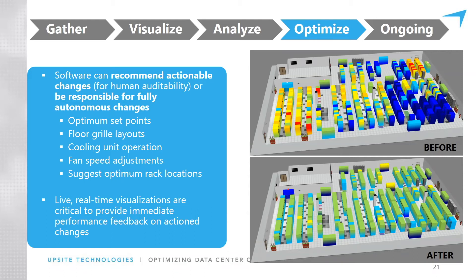It engages site personnel in the process of optimizing temperature set points, adjusting floor grilles, changing cooling unit fan speeds, and even suggesting recommendations for rack placement — analyzing and identifying where there is redundant cooling capacity in the room and where a new deployment can be supported. This is all done in real time and updated every few minutes; hundreds of thousands of data points can be collected per day and analyzed by these systems.